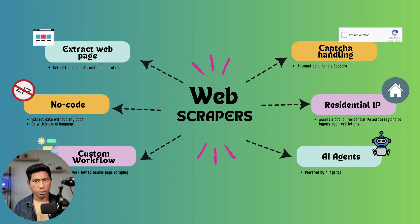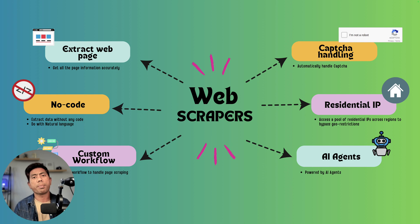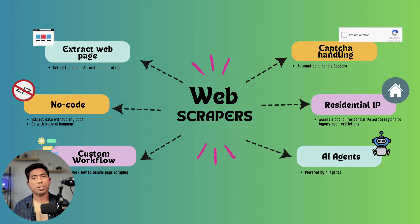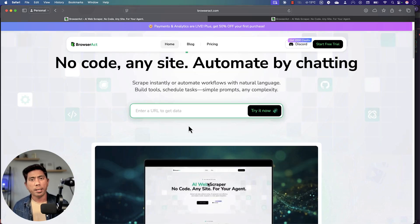Residential IPs are also important. If I'm working in New Zealand, I should have an IP specific to that country so I can bypass geo-restrictions. That's another fundamental part of any web scraper. Finally, all these operations need to work within AI agents and multi-agent systems. As agents evolve, the web scraper should support these features — and having all of them makes a better web scraping tool. That's exactly what Browser Act does.